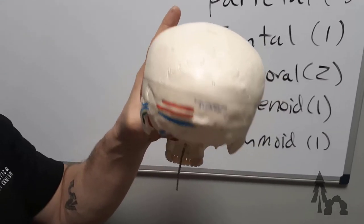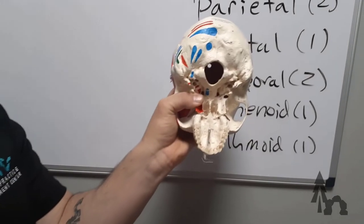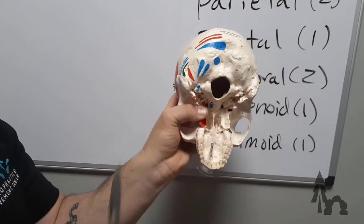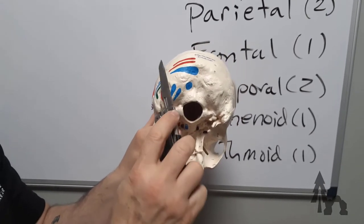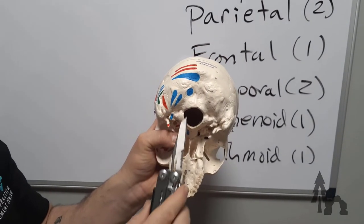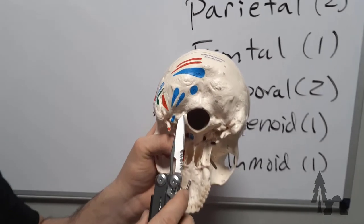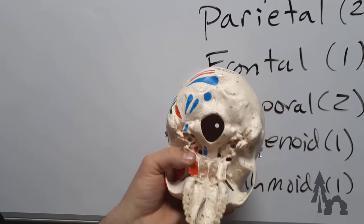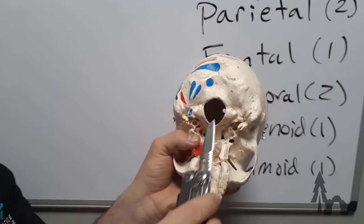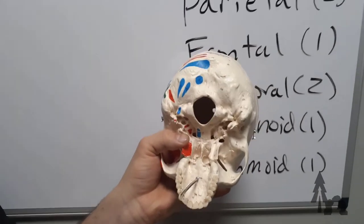I'm going to rotate the skull so it's facing the floor. And we're looking at the underside, or the inferior view of the skull. And we're still looking at the occipital bone. And you're going to notice right away that on the floor of the occipital bone, there's a giant hole. This is called the foramen magnum, which is Latin for giant hole. So that will be super easy.